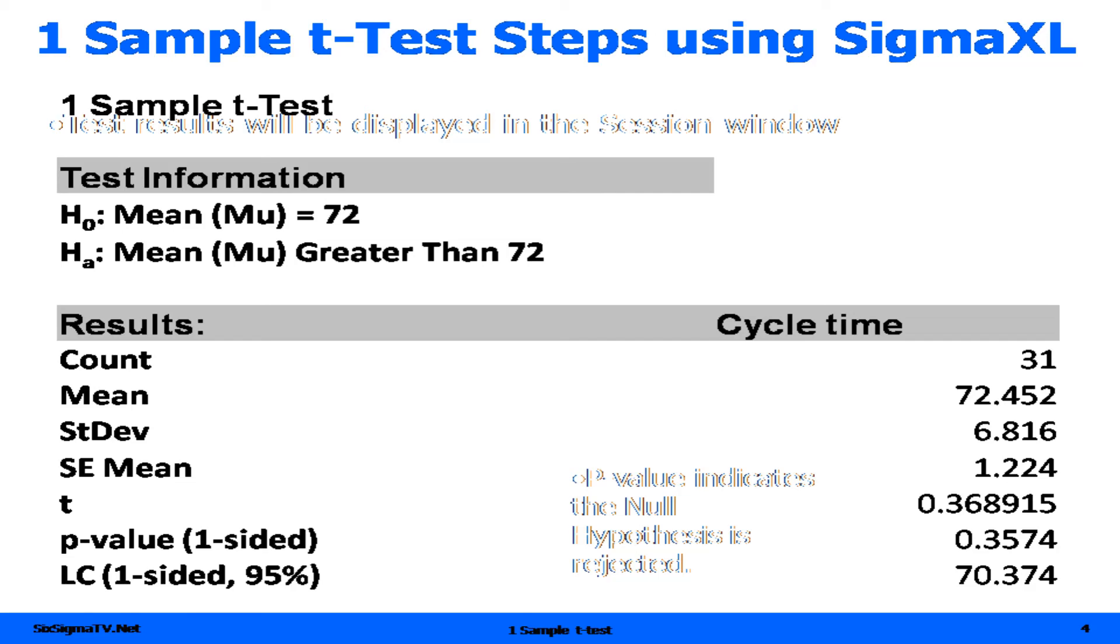So, in this scenario, we can conclude that there is no statistical difference between the sample mean and the process target.